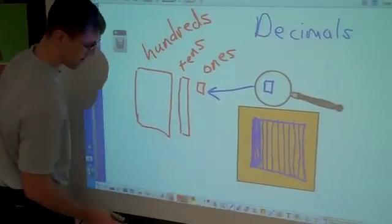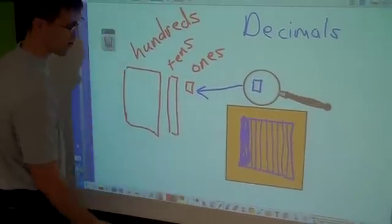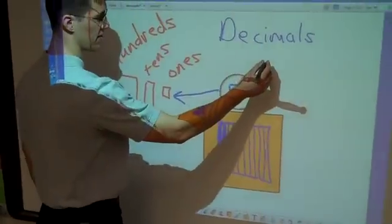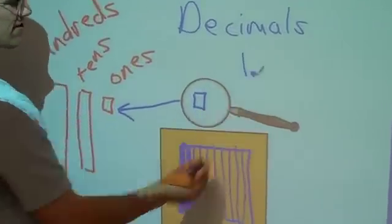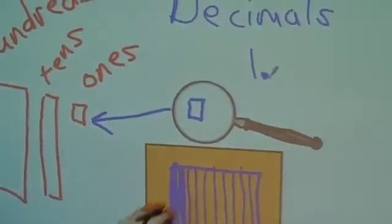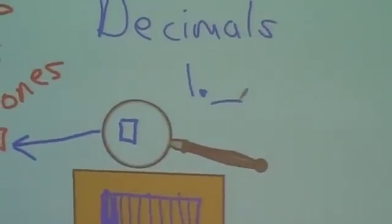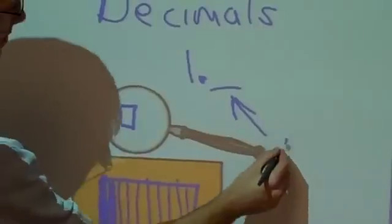You can think of each of these tenths as a part. And the way that we would write that or show that is like this. We would have our normal one, and anything that is a part of a one, we put in the place right after a decimal point. This is called the tenths place.